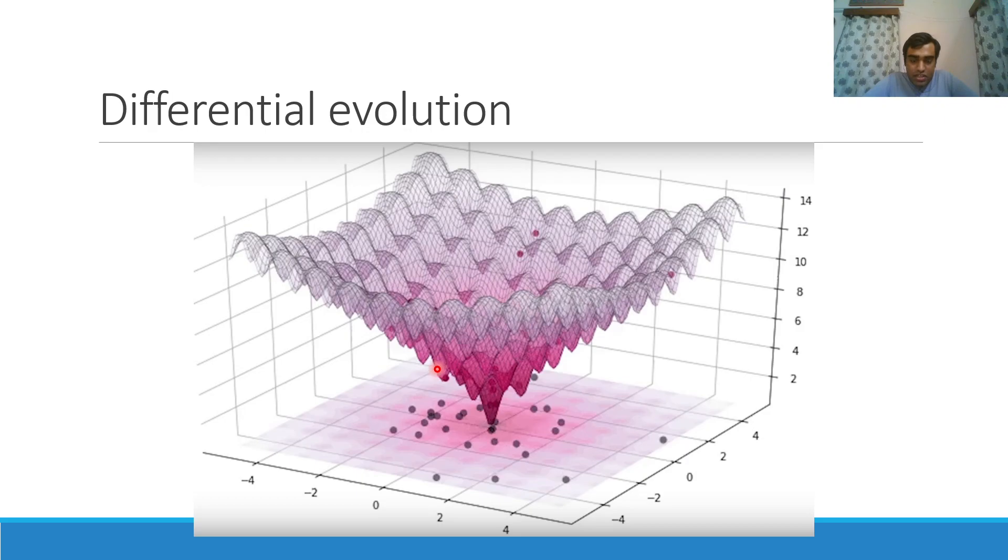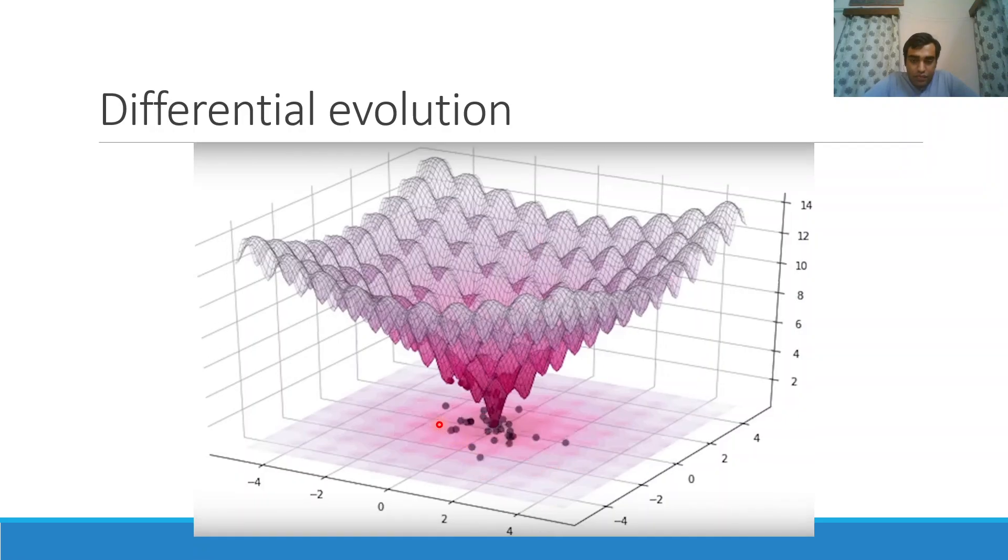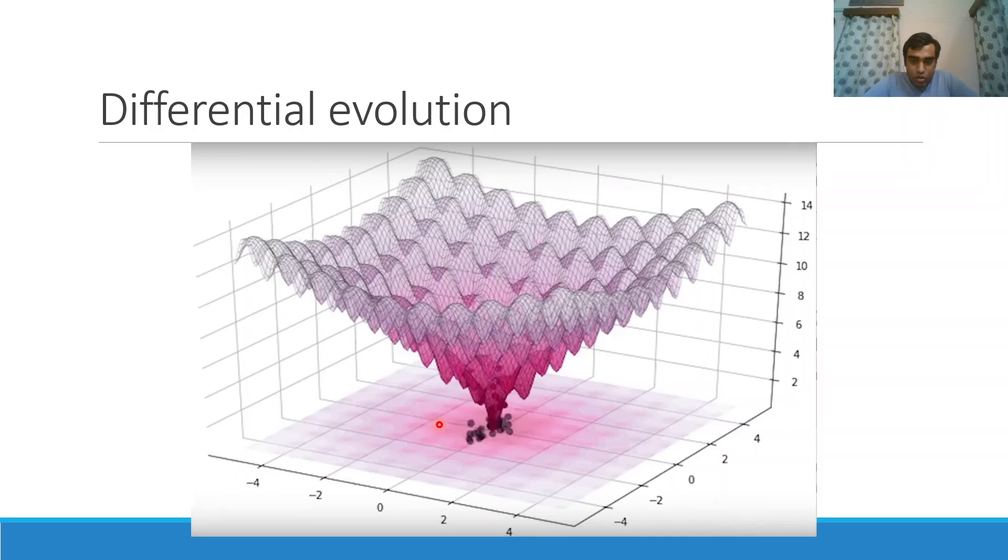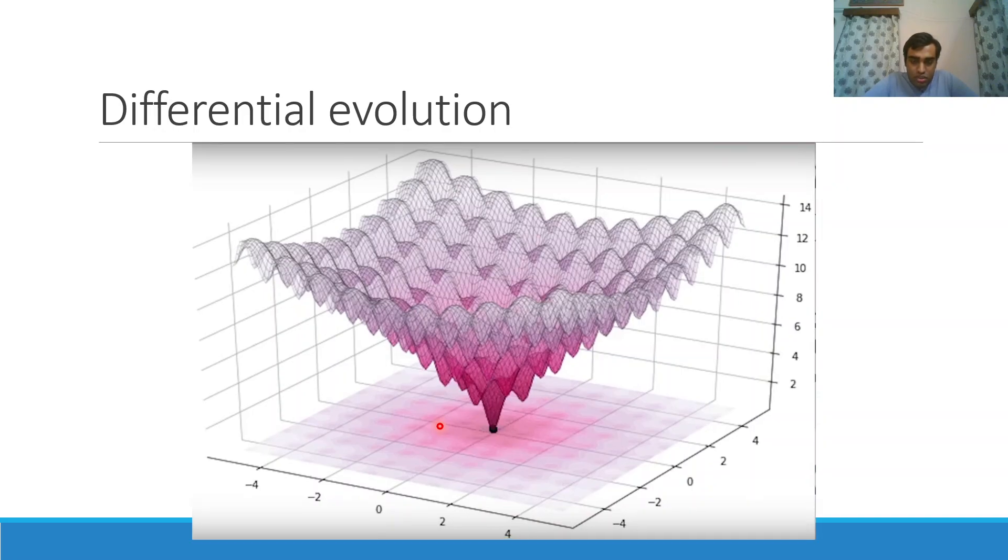Now this process will similarly continue for 9 iterations, and at the last the point which has the lowest objective function value will be picked as the optimal point. Here is another example in 3D space. Let's say this is the surface of the function. Here clearly is the global minimum. Here are the initial random points that have been taken in the population. After a good number of iterations, the population will converge around this global optimal point. This will find a good optimum point.